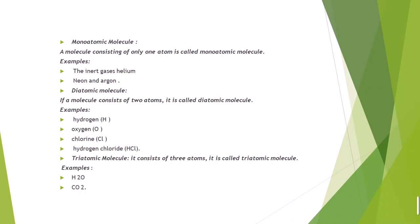A diatomic molecule consists of two atoms. Examples include hydrogen (H₂), oxygen (O₂), and chlorine (Cl₂) — these exist as diatomic gases. HCl, hydrochloric acid, is also a diatomic molecule formed by the combination of hydrogen (H) and chlorine (Cl).